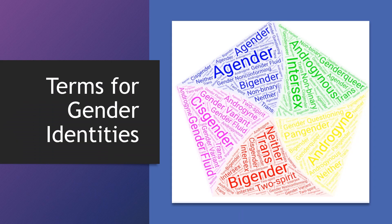There are many, many terms for gender identities. These are just some of the terms that are out there: agender, bigender, cisgender, two-spirit, intersex, non-binary, gender fluid, gender expansive. You do not need to know them all — just be aware that there are a number of them and it is getting more and more diverse.